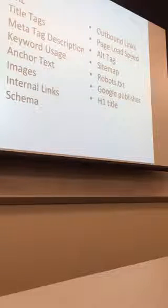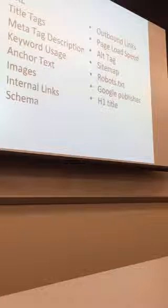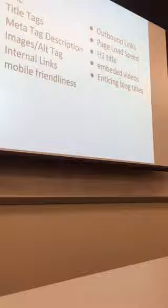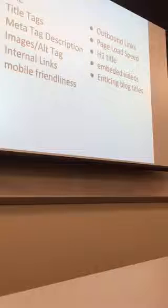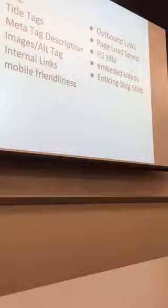Site speed matters. Alt tags describe images on the back end. Sitemap is a little technical. There's also Google Publisher and H1 tags. We won't cover everything today. What we will cover are title tag, meta tag, alt tag, and mobile-friendliness. Make sure your website is responsive and mobile-friendly, because last year Google announced that the majority of searches in Google are now done through mobile devices.